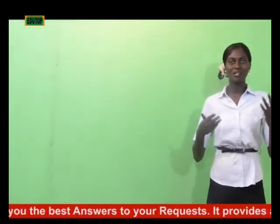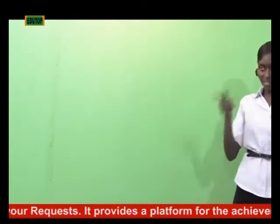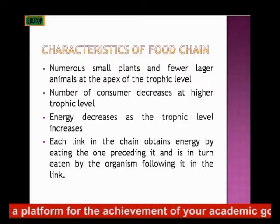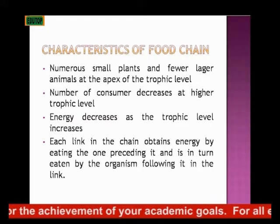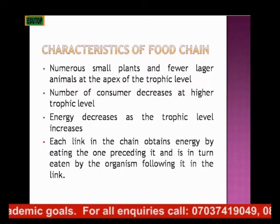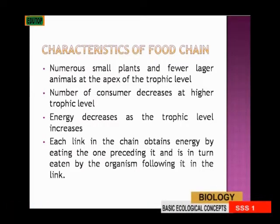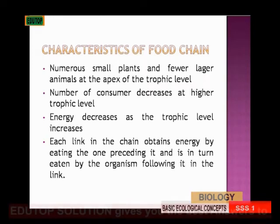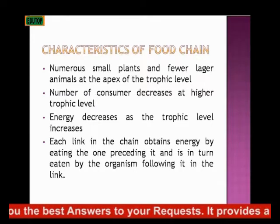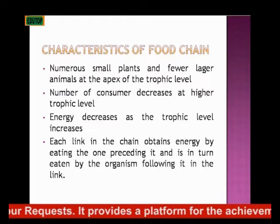Looking at the characteristics of a food chain — things that help you identify one — the first is that the food chain has numerous plants and fewer larger animals. Numerous small plants are found at the base, while larger animals are at the apex of the trophic level. For instance, in an aquatic ocean example, you have numerous green algae at the base, while at the apex you have very few seagulls.